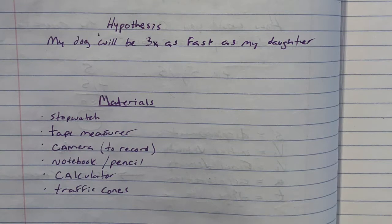My hypothesis is that my dog will be approximately three times as fast as my daughter on her scooter.